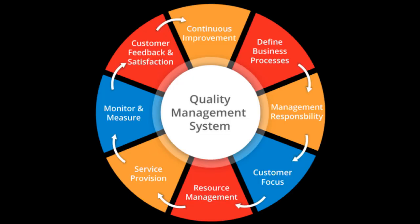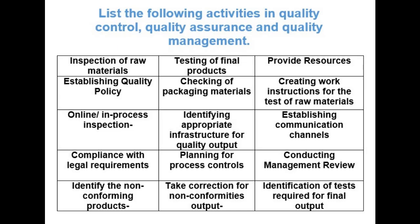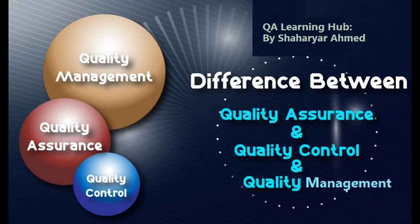First, try to do this activity on your own and check whether you can differentiate between the following activities of industry in quality management, quality assurance, and quality control or not. You have to list down these activities either in quality management, quality assurance, or quality control. Now let's understand what are quality control, quality assurance, and quality management activities.